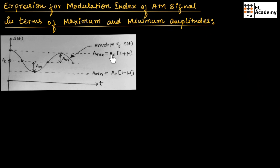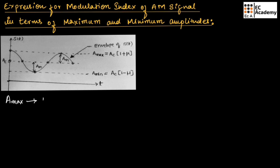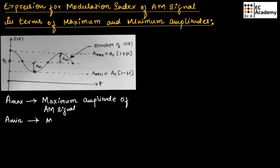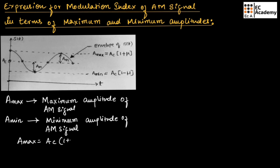A maximum can be given as AC into 1 plus mu, and A minimum can be given as AC into 1 minus mu. Here A maximum is the maximum amplitude of the amplitude modulated signal and A minimum is the minimum amplitude of AM signal. From the figure, we call these equation number 1 and equation number 2 respectively.